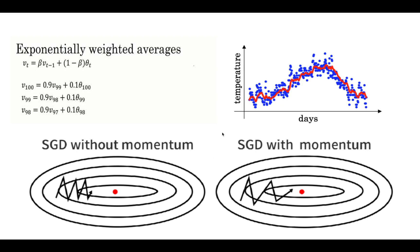The exponentially weighted average concept can be understood with an example of days and temperatures. If you are recording the temperature day by day and you take a general average and plot the graph, you get this kind of oscillations.